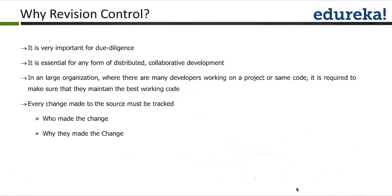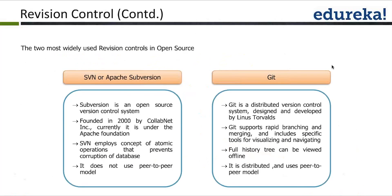Here is a comparison between SVN and Git. SVN, also known as Subversion, is from the Apache Foundation. It is an open-source version control system founded in 2000 by a company called Collab.net, and later taken over by the Apache Foundation. SVN employs atomic operations to prevent database corruption, and does not use a peer-to-peer model.